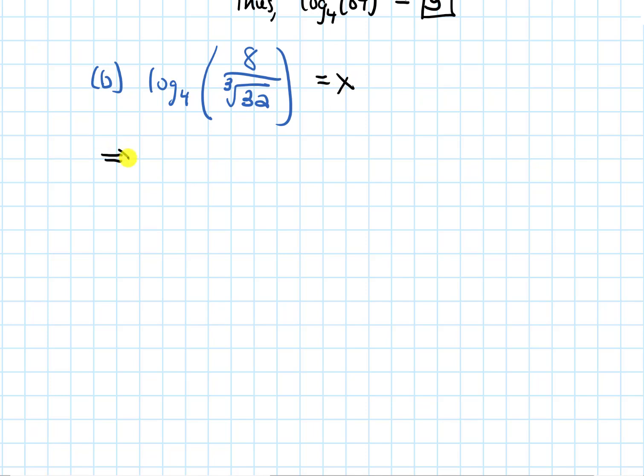Now let's put this in exponential form. The base of the log becomes the base of the exponent. The output, which was x, becomes the input of the exponential. And the input of the log, this fraction, now becomes the output. So I get 8 over cube root of 32 over here.